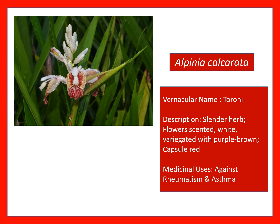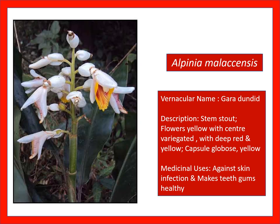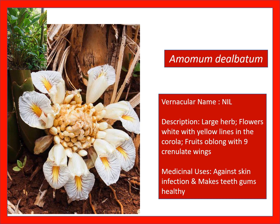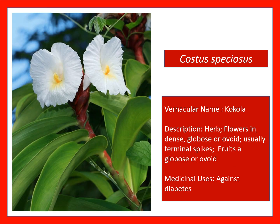Plants belonging to the Zingiberaceae family: Alpinia calcarata, vernacular name Toroni — a cylindrical herb with scented white flowers variegated with purple-brown, red capsule, used against rheumatism and asthma. Alpinia malaccensis — medicinal usage against skin infection and for healthy teeth and gums. Costus speciosus, also known as the insulin plant — medicinal usage against diabetes, particularly using its leaves.